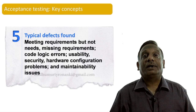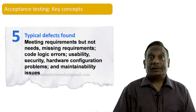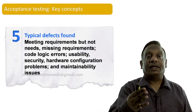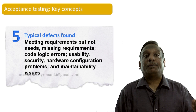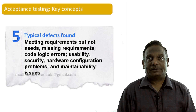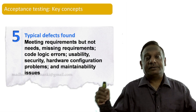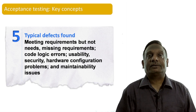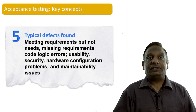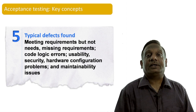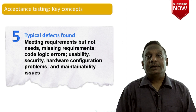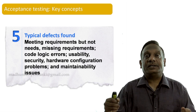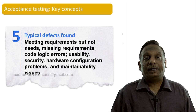The typical defects found at acceptance testing include not just failing to meet requirements, but whether the software is serving a purpose or need. The software may meet requirements but still not fulfill end-user needs. Other defects include missing requirements, code logic errors, usability issues, security issues, hardware configuration problems, and maintainability issues — whether it is easy to make a change in the system.